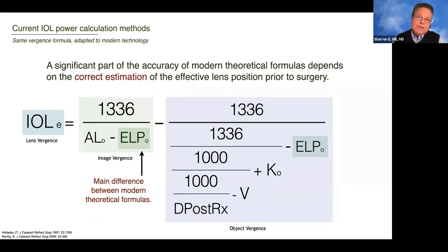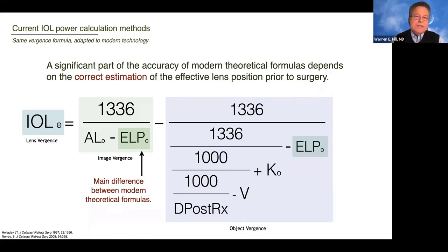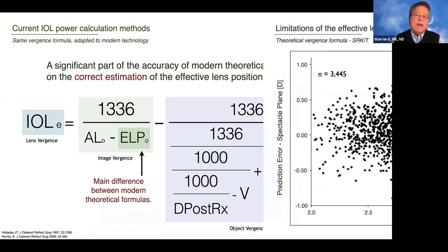The main difference between most vergence formulas is how they determine the effective lens position, and the correct estimation of the effective lens position is one of the main determinants of IOL power calculation accuracy. Some more recent vergence formulas, like Graham Barrett's Universal II formula, do a very good job with this, but his formula is more like a calculation method than a regular formula you could write on a single piece of paper. The older formulas from the 90s and early 2000s really fall short in estimating the effective lens position, and as we all know, the effective lens position can only be estimated — it can't be accurately calculated because it's based on things that are unknowable.